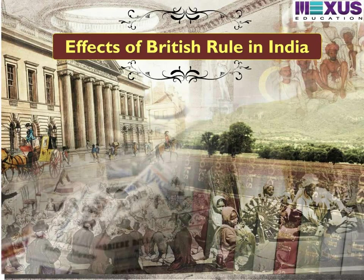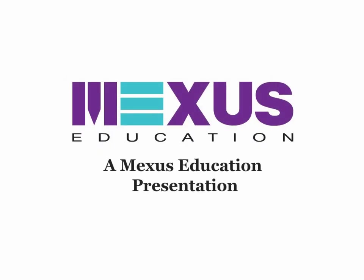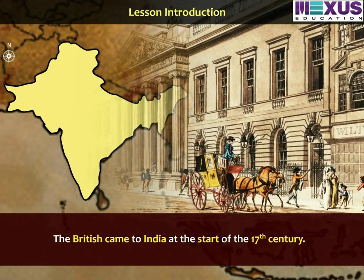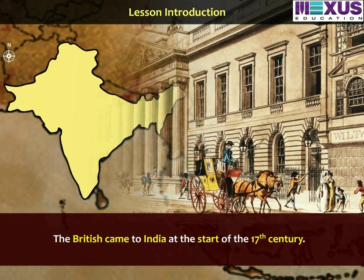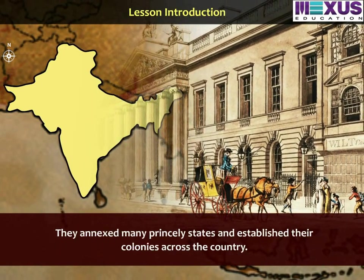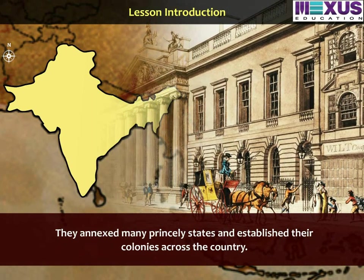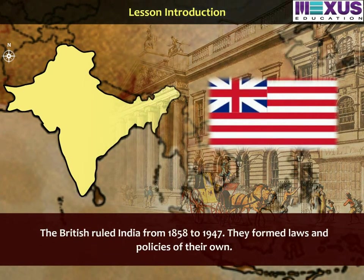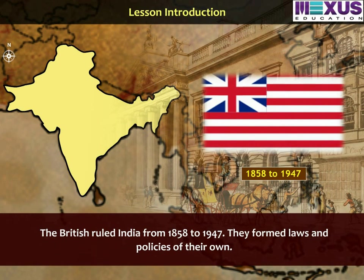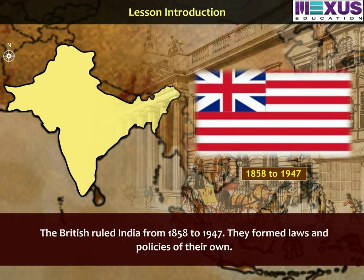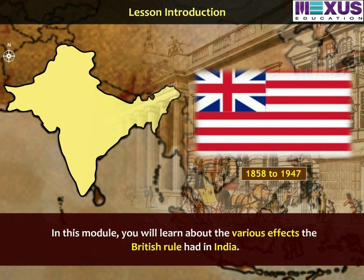Effects of British Rule in India. The British came to India at the start of the 17th century. They annexed many princely states and established their colonies across the country. The British ruled India from 1858 to 1947 and formed laws and policies of their own. In this module, you will learn about the various effects British rule had in India.